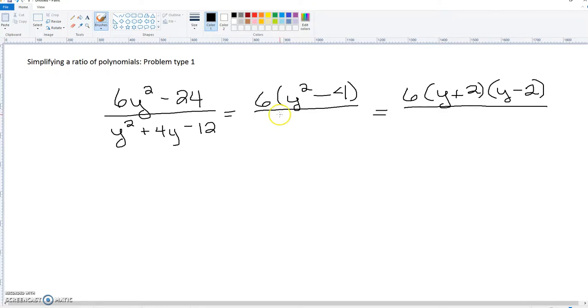Now we're going to look at the bottom and this is leading coefficient of 1, so that means we can just simply take two sets of parentheses and we need factors of negative 12 that'll add up to get us positive 4. We already know that we're going to have a y in each. We've got several factors of negative 12, but we need them to add up to 4.